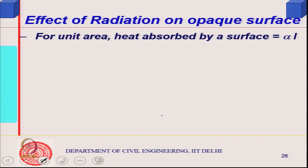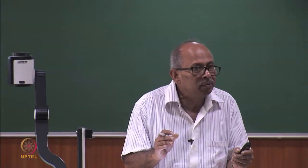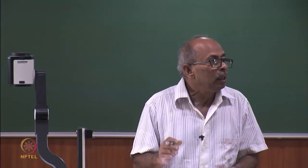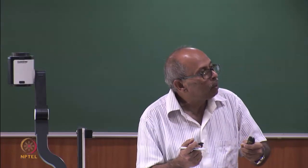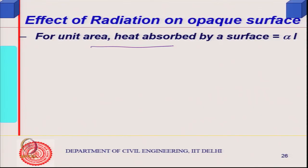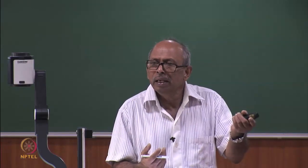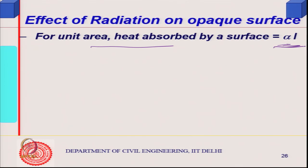Steady-state heat flow also occurs by other modes. Convection here refers to ventilation or infiltration — the circulation of air. Radiation on an opaque body such as a rooftop causes heating of the surface itself, which is then transmitted inside by conduction.